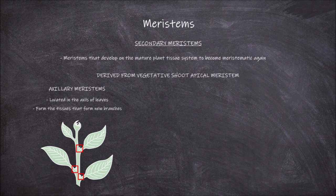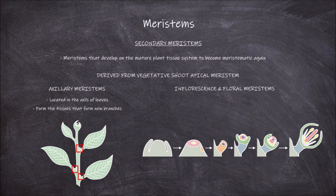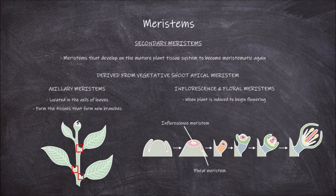Other variants derived from the vegetative shoot apical meristem are the inflorescence and floral meristems. Inflorescence and floral meristems are formed from the vegetative shoot meristem when the plant is induced to begin flowering. This transformation of the vegetative meristem can be straight into a floral meristem, but in many cases it will transform into an inflorescence meristem first. Inflorescence meristems go on to form bracts and floral meristems. Floral meristems go on to produce the floral organs and whorls.